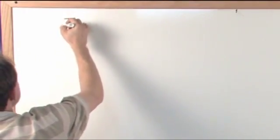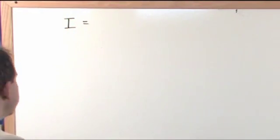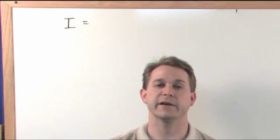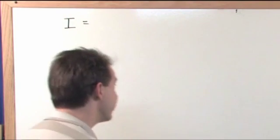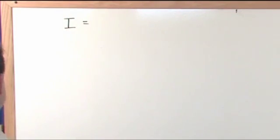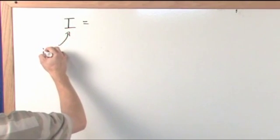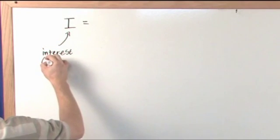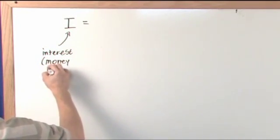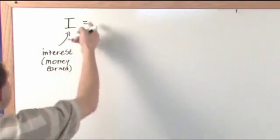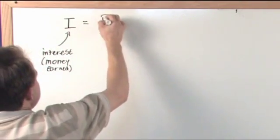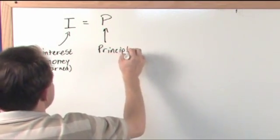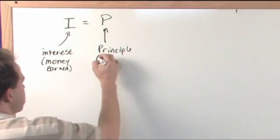The interest that you earn, which is the money that you earn from an investment or the money that you earn from your money being in a good savings account that draws interest - the interest is the money that you earn and that's called I. So I is the interest. The interest, which is just simply another word that means money earned. The interest is equal to P, which is the principal. The principal, which is just simply another word that means money invested.